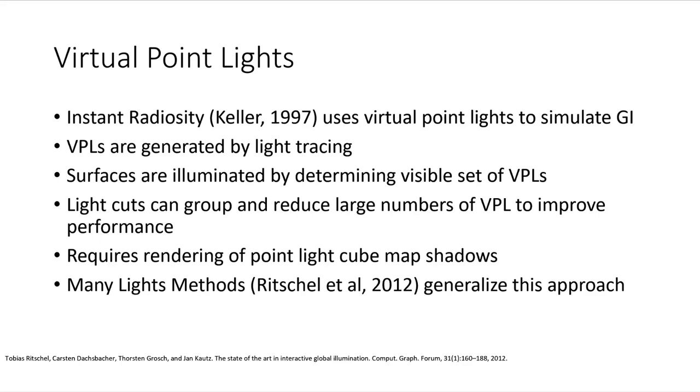Next, let us look at virtual point lights, or VPLs. Keller introduced instant radiosity in 1997. We light trace photons inside a scene and create a set of VPLs. If you have many VPLs, you can reduce them using light cuts. VPLs require rendering point light shadows, and the generic term many light methods is how you find research on them nowadays. The big problem with VPLs is that they can result in hot spots in your image, which require clamping. So these visual defects need to be worked around in practice.